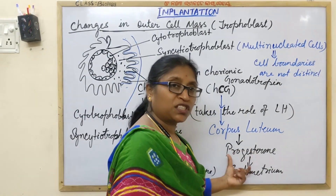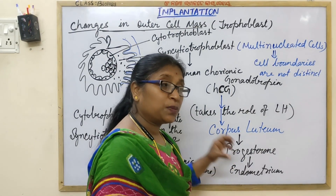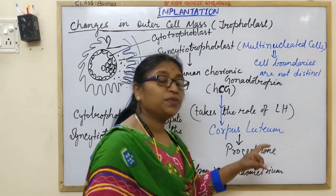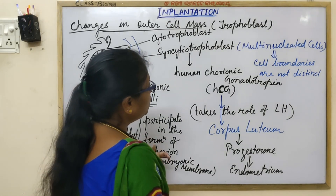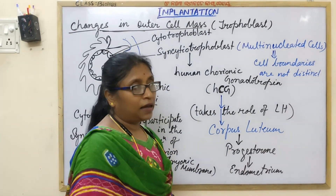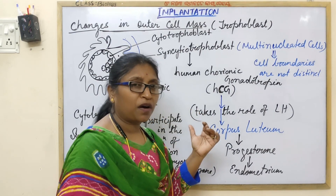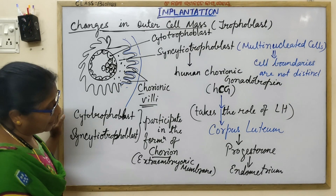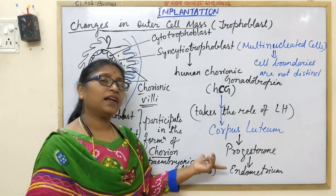Under the influence of progesterone, the cervical mucosal plug is created, and the endometrium is maintained throughout the pregnancy. That is why progesterone is called the pregnancy hormone. Up to about 10 to 12 weeks, the corpus luteum is maintained by HCG. Then the embryo itself — specifically the placenta, formed by fetal and maternal tissue — produces progesterone, and the corpus luteum gradually degenerates and becomes vestigial.